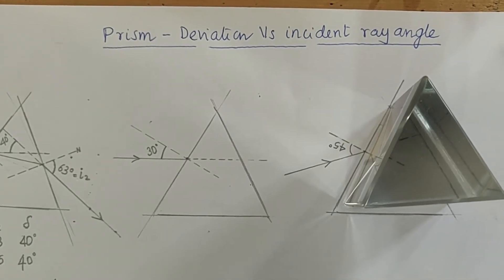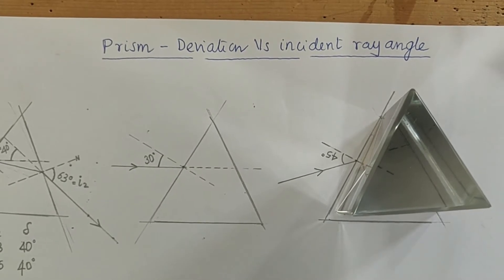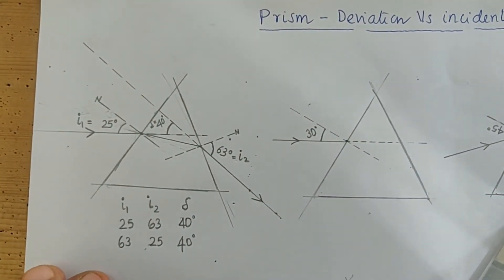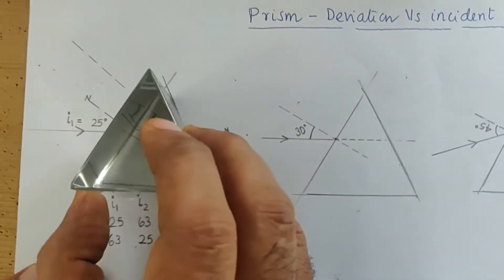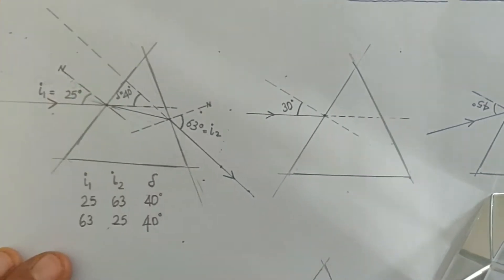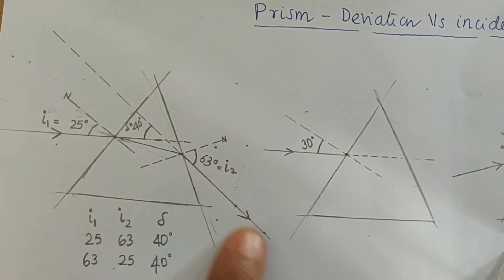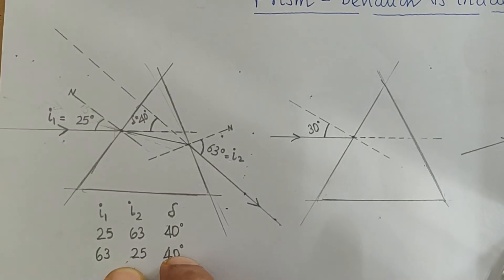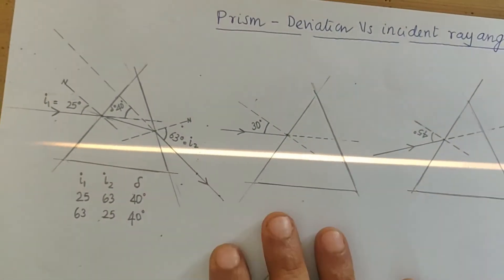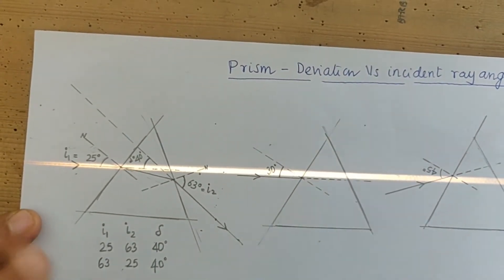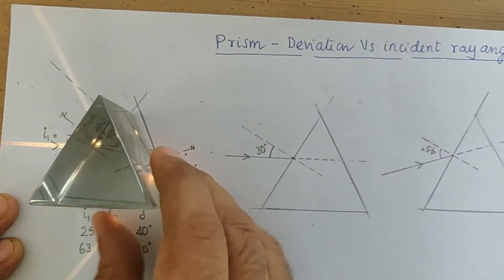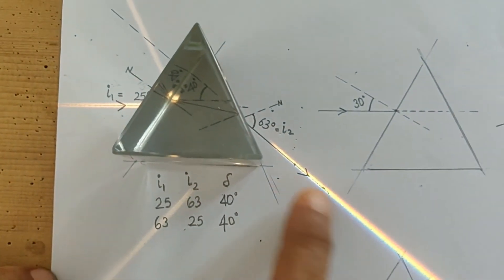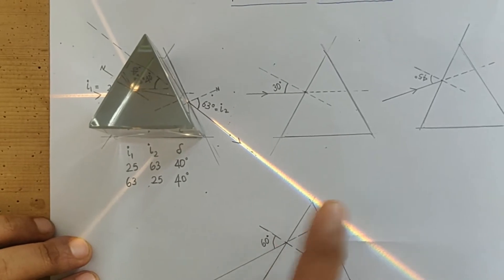Welcome to this experiment on prisms. Here we're going to study how for different incident rays the light deviates in a prism. I have one experiment already done to indicate what we're going to do. We have an outline of a prism, a normal, and an incident ray at 25 degrees. I make the light beam come in at this angle, keeping the prism precisely on the outline, and you can see the ray is exiting — you can even see slight dispersion.